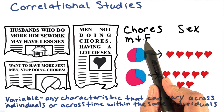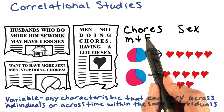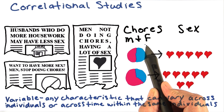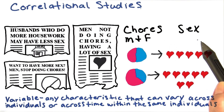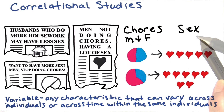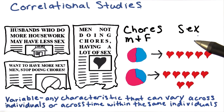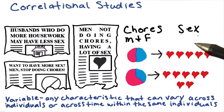In this case, chores — the number and type, masculine versus feminine — and the amount of sexual encounters. An important distinction in correlational studies is that they do not manipulate any variables. Instead, we're just measuring to see whether the variables are related.